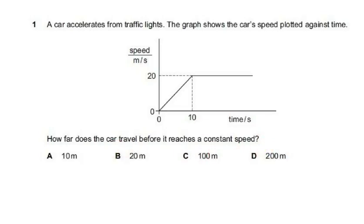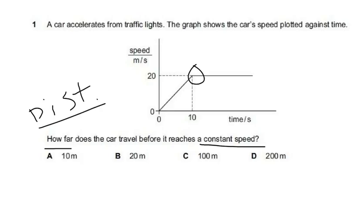The question asks how far the car travels before it reaches a constant speed. 'How far' refers to distance, and on a speed-time graph you can find the distance traveled by taking the area under the graph. The area we need to calculate is the red-shaded triangular region before the car reaches constant speed.